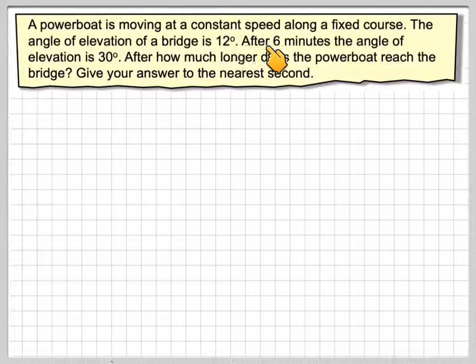A powerboat is moving at a constant speed along a fixed course. The angle of elevation of the bridge is 12 degrees. After six minutes, the angle of elevation is 30 degrees. After how much longer does the powerboat reach the bridge? Give your answer to the nearest second.